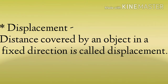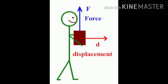If there is an object moving in a fixed direction, then we call it displacement. Direction should be specified. If an object is moving in a fixed direction — like North or East — and covers a distance, then we call it displacement.